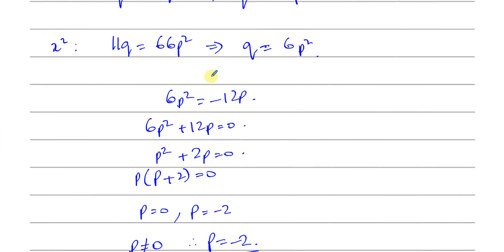And to find the value of Q, you can simply just substitute it into this equation. We know that Q is equal to 6 times P squared. So Q is equal to 6 times minus 2 squared, which is equal to 6 times 4, which is 24.